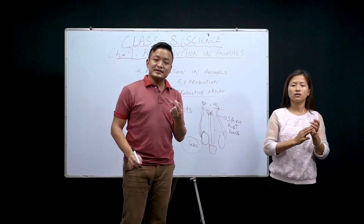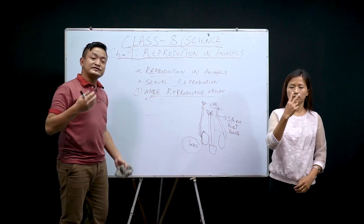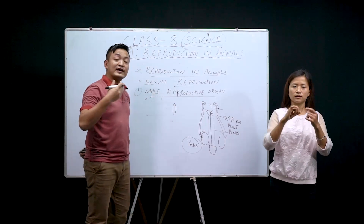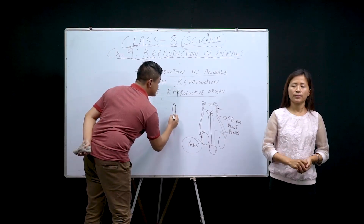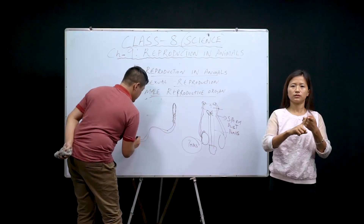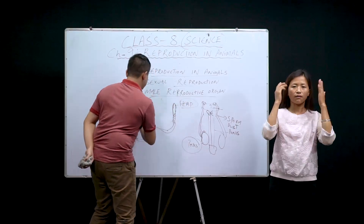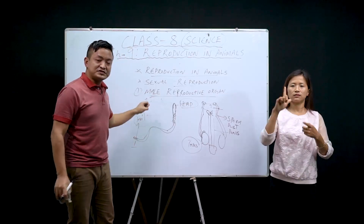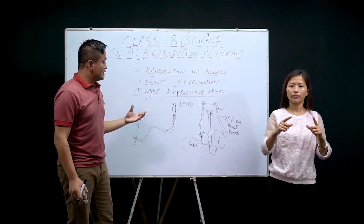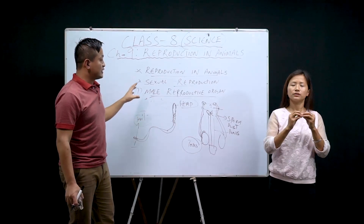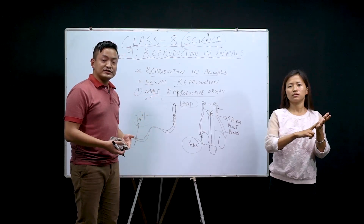The sperm is a single cell. The human male sperm has a tail and a head part. This is the head part, this is the tail part, and this is the middle piece. It is a cell and has all the functions of a cell. Now we will study about the female reproductive organ, and after that we will study about fertilization.